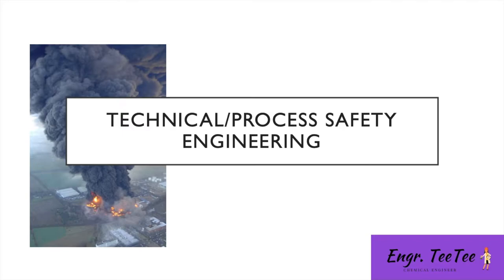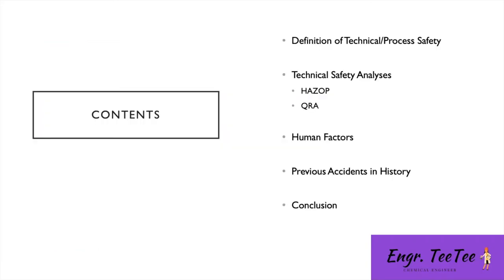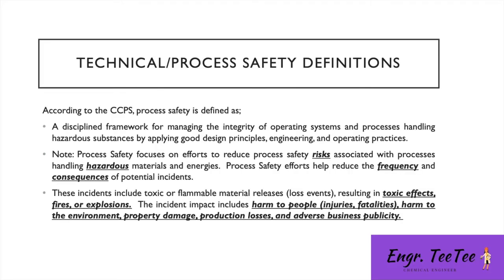If you're interested in learning more about process safety engineering and what it entails from a process perspective, please keep watching. We'll be looking at the definition of process safety, different types of analysis — both qualitative and quantitative — the role of human factors, previous accidents in history, and a conclusion.